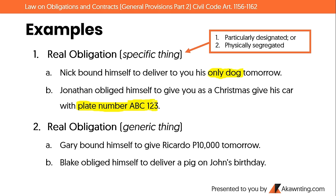Examples of real obligation to give a generic thing: Gary bound himself to give Ricardo 10,000 pesos tomorrow. Money is always considered generic. Second example: Blake obliged himself to deliver a pig on John's birthday — simply 'a pig,' meaning any pig will do. As long as he delivers a pig, he has complied with his obligation.